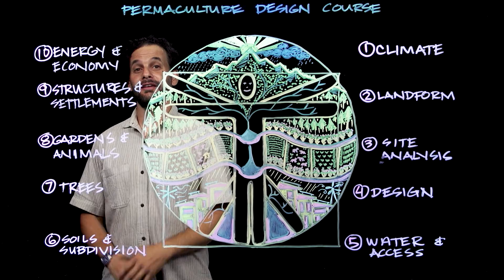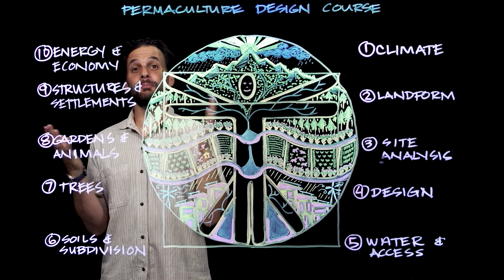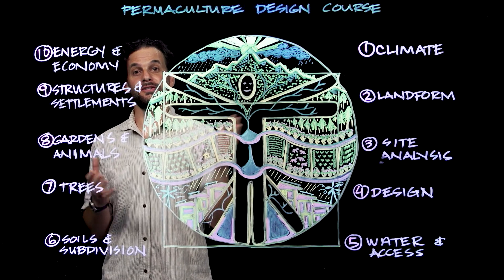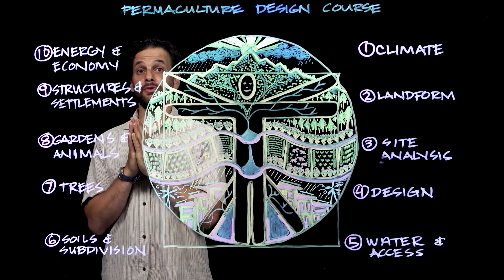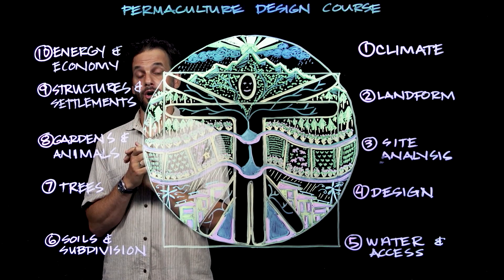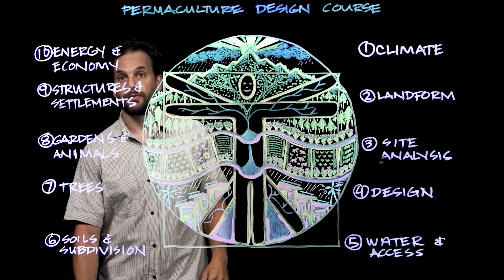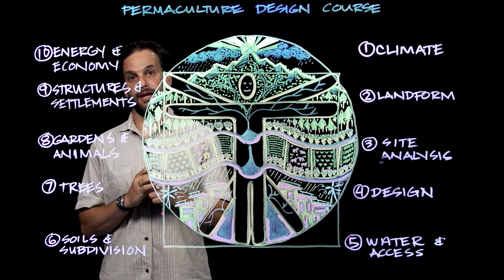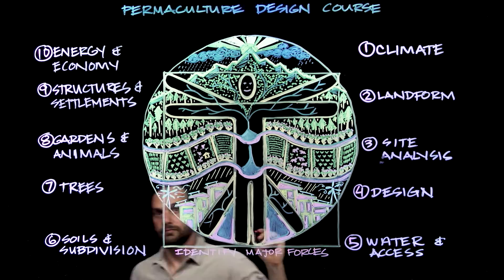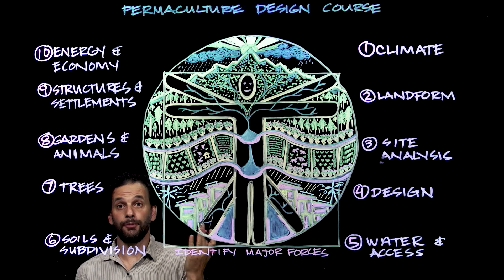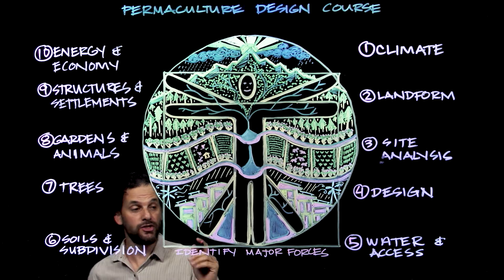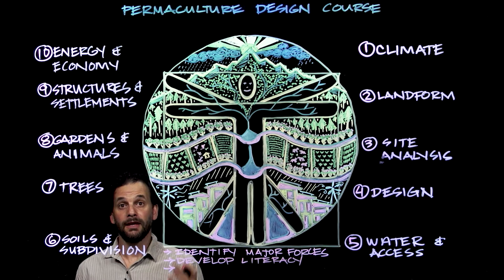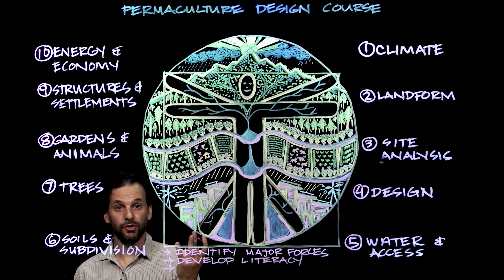So there you have it — the outline of the course. Our entire permaculture design course curriculum has a process of applying design medicine to our design sites. This curriculum covers the three primary learning goals for this course: number one, identify the major local forces that need to be addressed with design; number two, develop literacy in permaculture terms, concepts, and strategies; and number three, demonstrate competency in the permaculture design system.